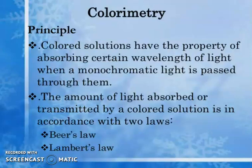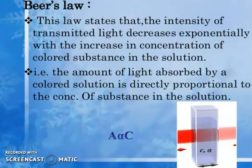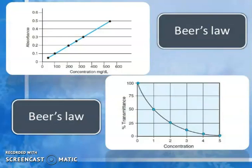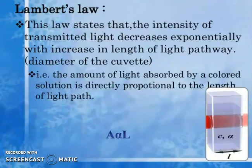Colored solutions absorb certain wavelengths of light when monochromatic light is passed through them. The amount of light absorbed or transmitted is governed by two laws: Beer's law and Lambert's law. Beer's law states that the intensity of transmitted light decreases exponentially with increasing concentration of the colored substance — the amount of light absorbed is directly proportional to the concentration. Lambert's law states that the intensity of transmitted light decreases exponentially with the length of the light path (diameter of the cuvette) — the amount of light absorbed is directly proportional to the path length.